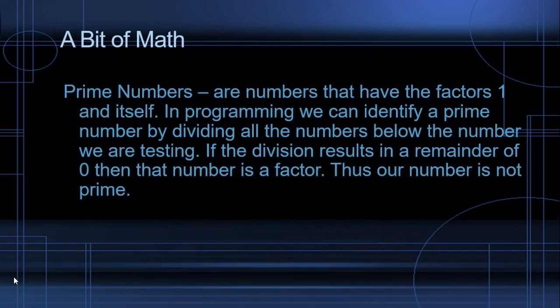Let's review a bit of math first. Prime numbers are numbers that have factors of 1 and itself. In programming, we can identify a prime number by dividing all the numbers below the number we are testing. If the division results in a remainder of 0, then that number is a factor, thus our number is not prime.